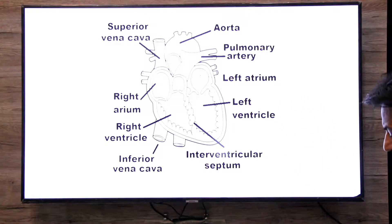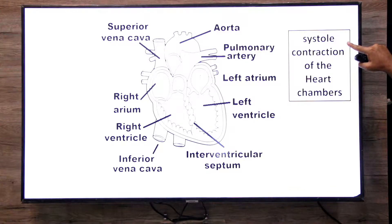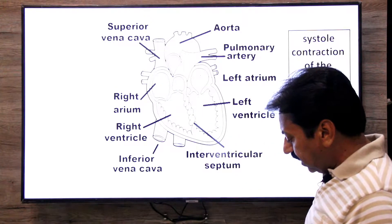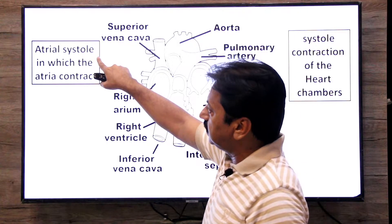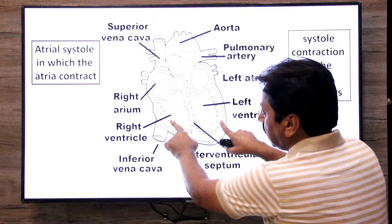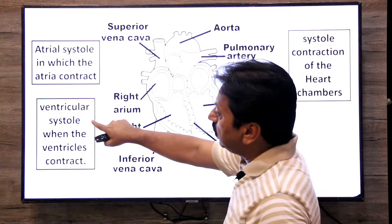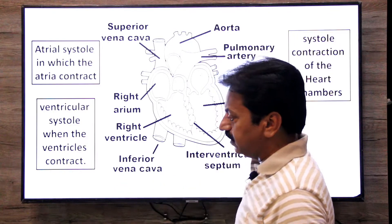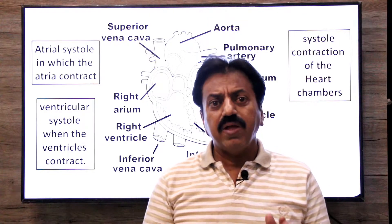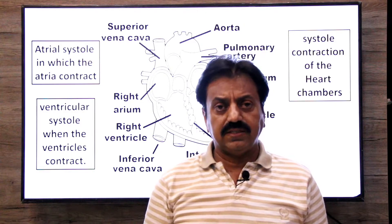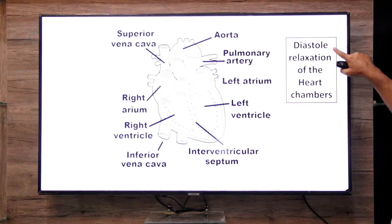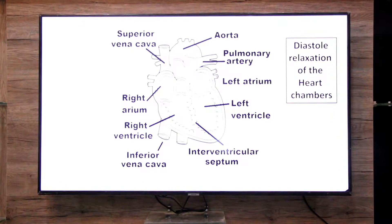When our heart is contracted, that is called systole — contraction of the heart chambers. And when both sides of the heart chambers are relaxed, it is called diastole — relaxation of the heart chambers.